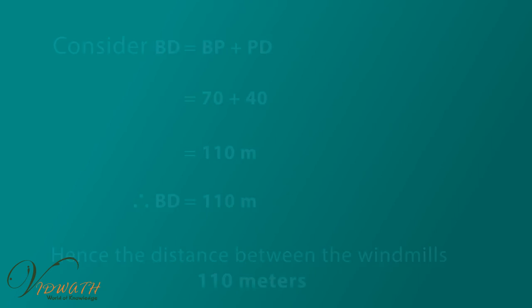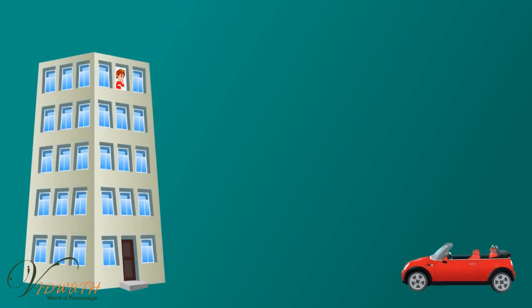Example 2: From the top of a building 85 square root of 3 meter height, the angle of depression of a car on the ground is observed to be 60 degree. Find the distance of the car from the building.